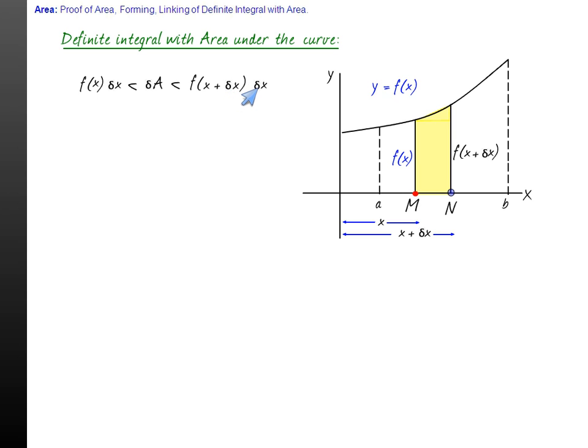This will lie between f(x) times delta x and f of x plus delta x times delta x. Why? Because this length is f(x) and this breadth will be delta x, so the area of this rectangle is f(x) delta x, but there is another rectangle and that rectangle's area will be f of x plus delta x into delta x, length into breadth.